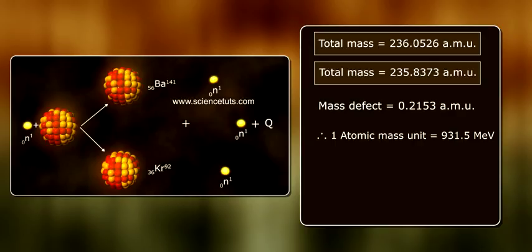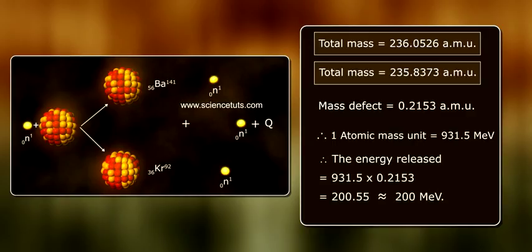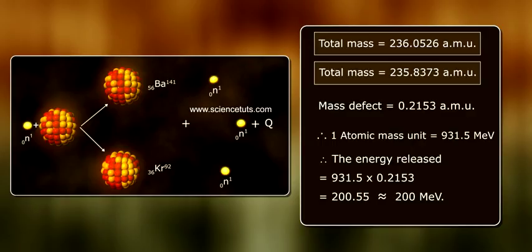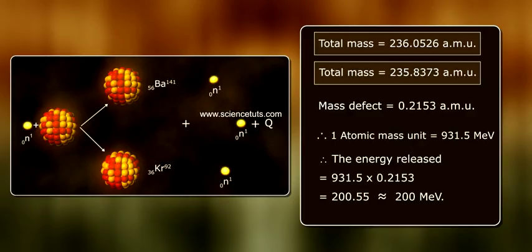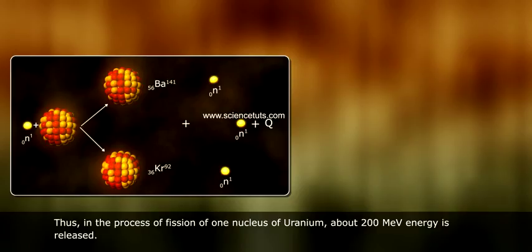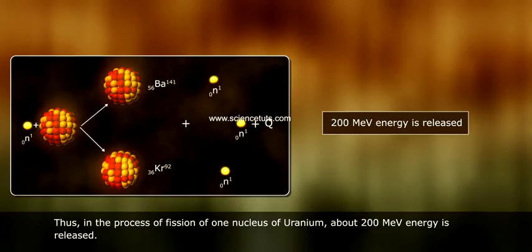Since one atomic mass unit is equal to 931.5 mega electron volts, therefore the energy released is equal to 931.5 × 0.2153, which equals 200.55, nearer to 200 mega electron volts. Thus, in the process of fission of one nucleus of uranium, about 200 mega electron volts of energy is released.